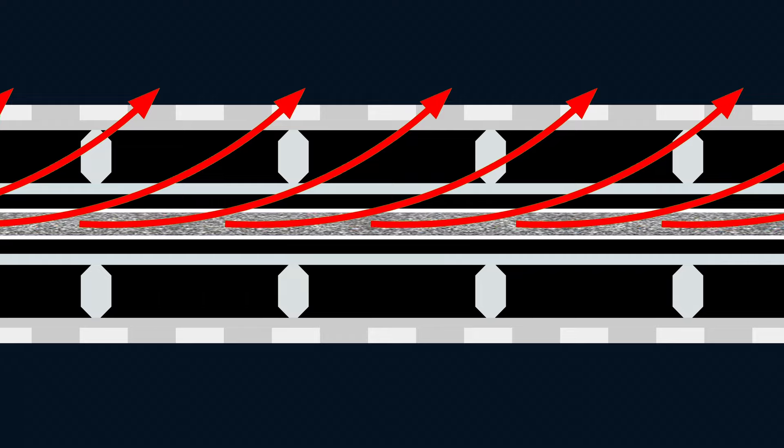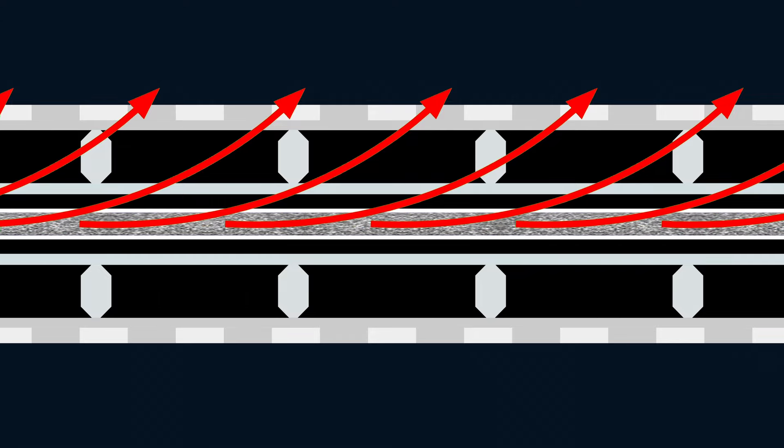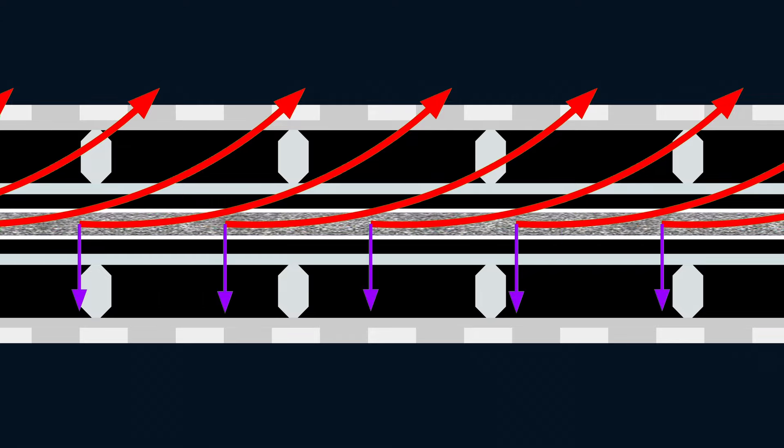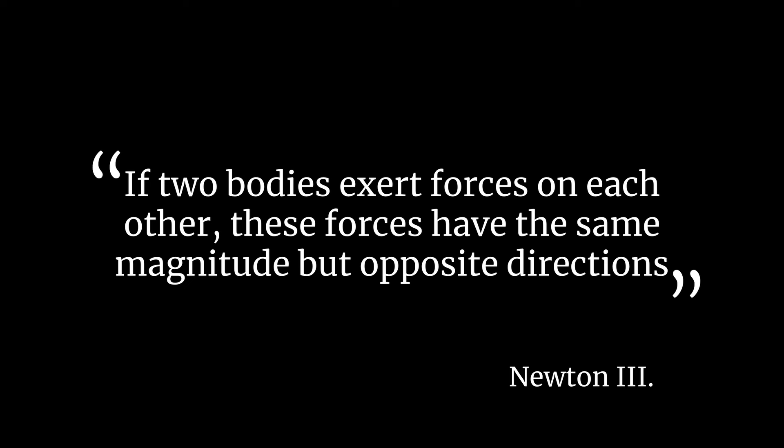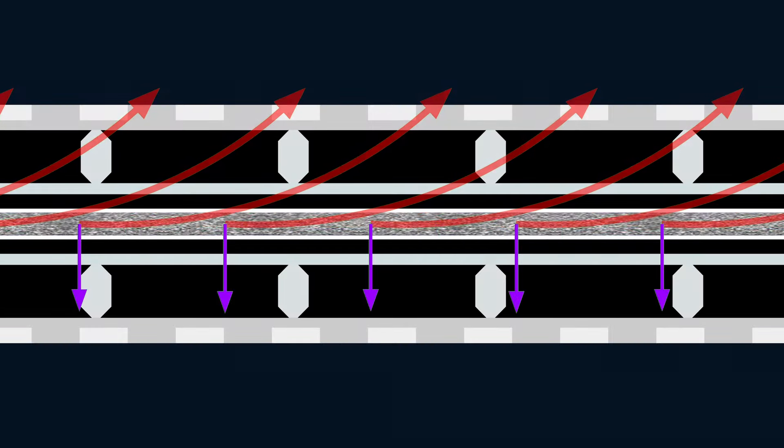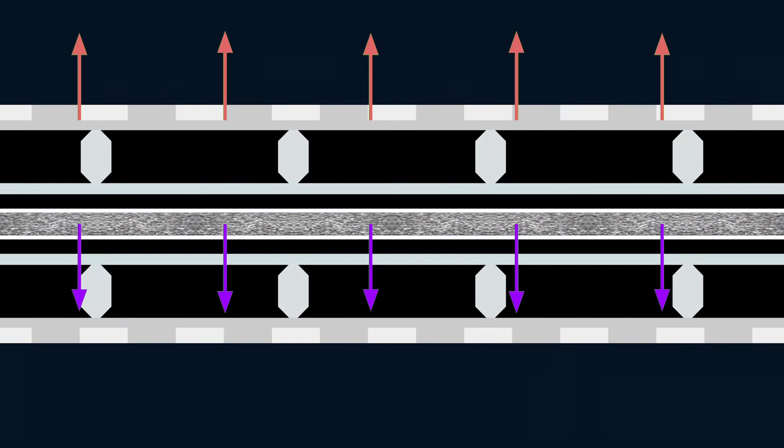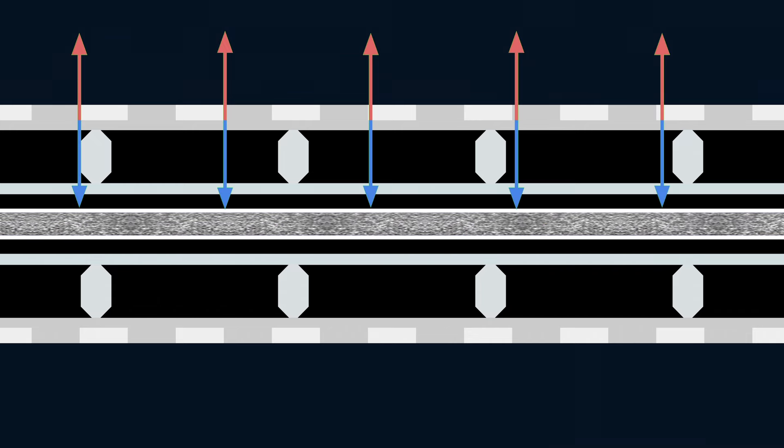To keep the stream from tearing itself apart, the exterior layer would provide an inward force on the stream. This force would come from magnetism. Due to Newton's third law that if two bodies exert forces on each other, these forces have the same magnitude but opposite directions, this inward force would be paired with an outward force exerted on the exterior ring. This outward force would provide a counterbalance to gravity.